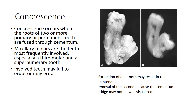Concrescence occurs when the roots of two or more primary or permanent teeth are fused through cementum. The maxillary molars are most frequently involved, especially a third molar and a supernumerary tooth, and the involved tooth may fail to erupt or may erupt. Extraction of one tooth may result in unintended removal of the second because the cementum bridge may not always be visible on a radiograph. This is an example of two molars fused due to concrescence where extraction of one resulted in removal of the other.